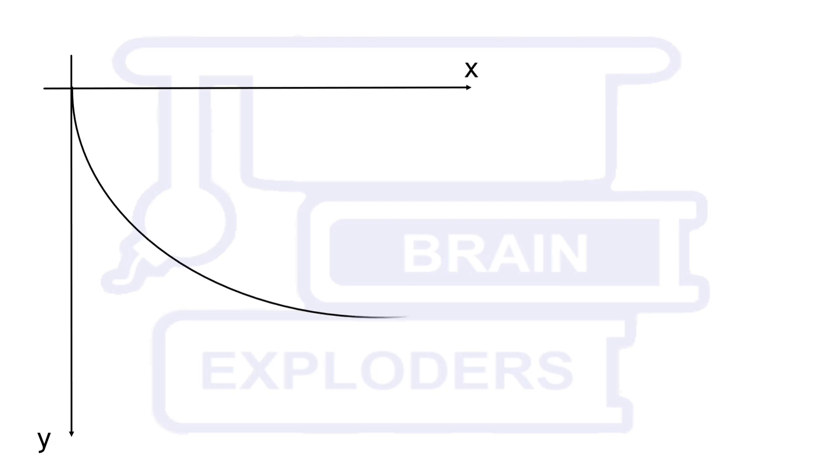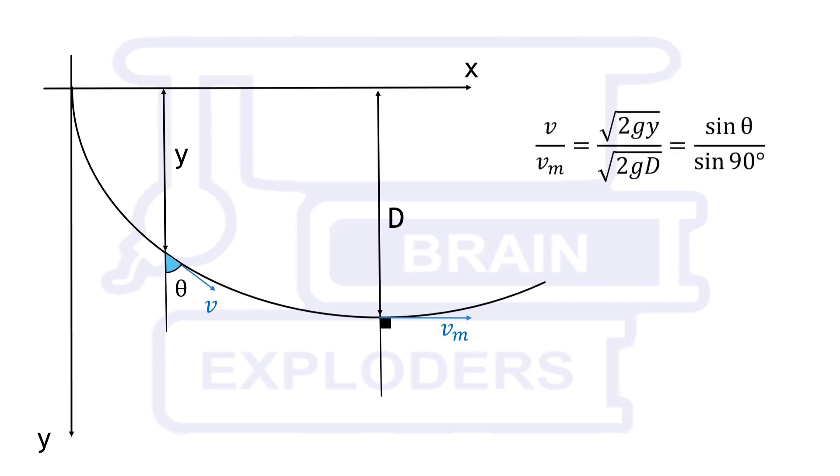Suppose curve starts from the origin of a cartesian plane and d is the maximum depth of the curve. At maximum depth velocity is maximum and curve is parallel to x-axis so theta is 90 degrees. Let at any other point distance from x-axis is y and angle between curve and negative y-axis is theta. Ratios of velocities is equal to ratio of sin of these angles.